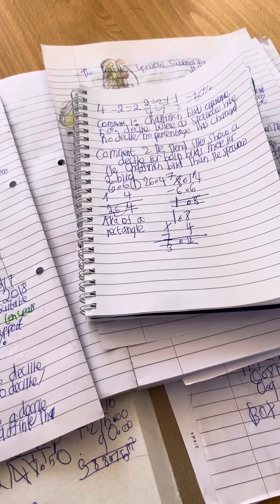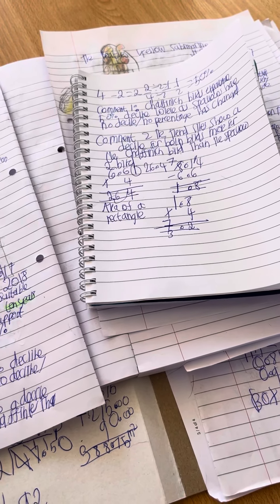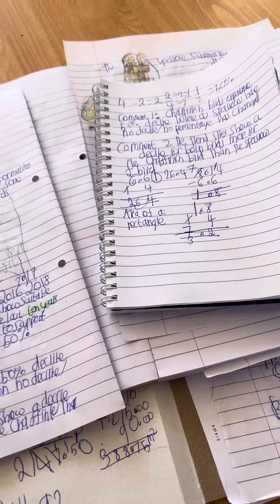1.8 times 4. 8 times 4 is 32. 4 times 1 is 4. Up the 3, you get 7.2.